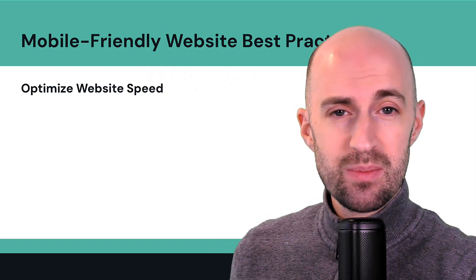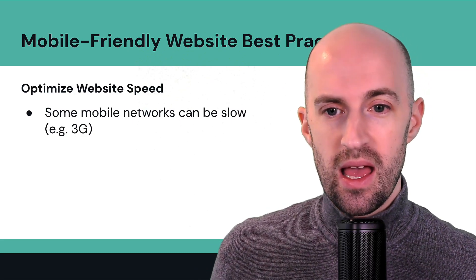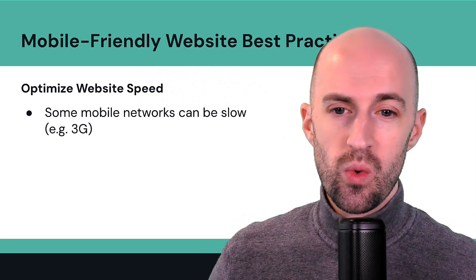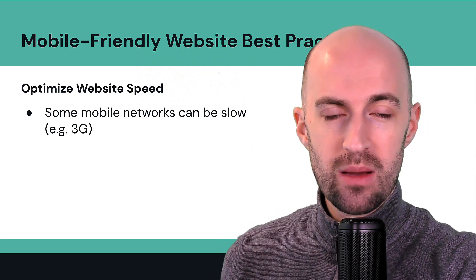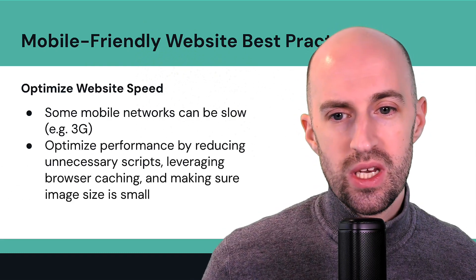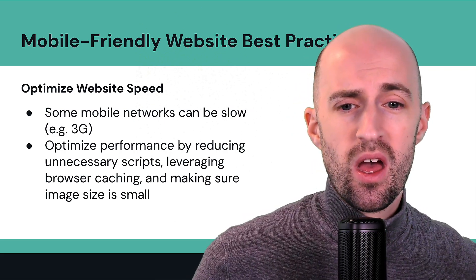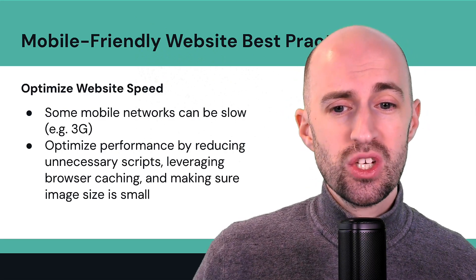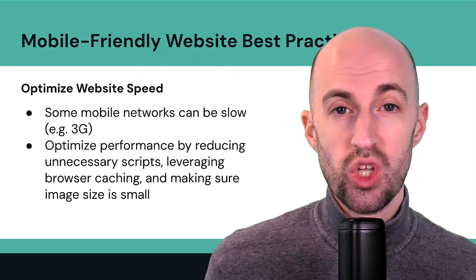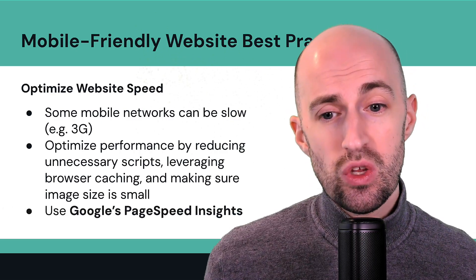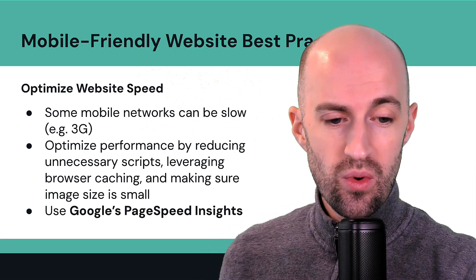Optimize website speed. Some mobile networks can be slow, like 3G, and there are areas where you might go where you just don't have 4G or 5G speed anymore — that's where it becomes even more important. You need to optimize the performance of your site by reducing unnecessary scripts, leveraging browser caching, and making sure that the image size is small so that images load quickly on a slow connection. You can use Google's PageSpeed Insights tool to check your site for loading speed.